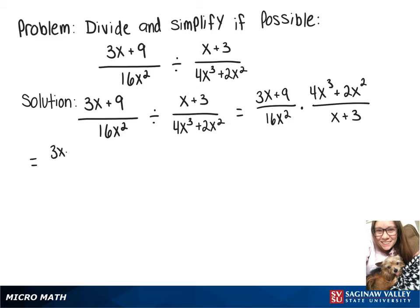Multiplying across the top and across the bottom will give us 3x plus 9 times 4x to the third plus 2x squared over 16x squared times x plus 3.